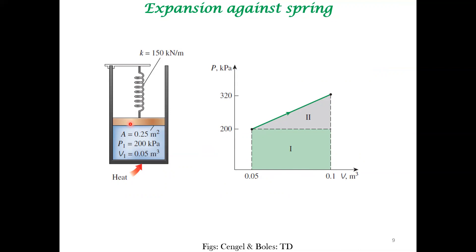In many cases we may have a massless piston, but in certain cases we can also include a piston with a particular mass and analyze such a scenario using a Hookean spring. We will stop here and look at energy balance in the next lecture. In this lecture we were only looking at boundary work. Thank you.